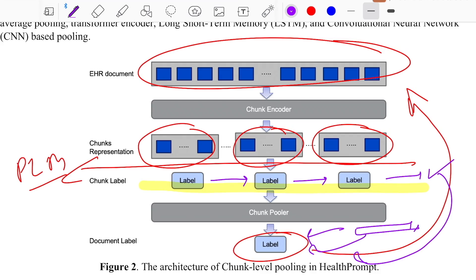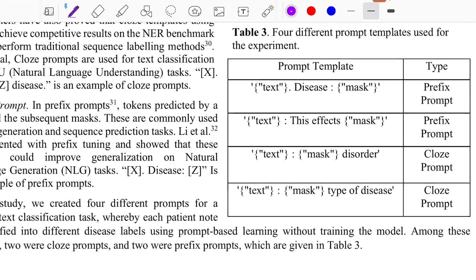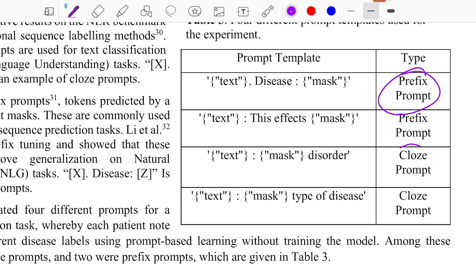For template design, the authors try two versions: prefix prompts and cloze prompts. The cloze prompt idea is predicting a fill-in-the-blank in a given text. For example, you take the original text, apply a colon as part of the template design, insert a mask token for the system to predict, and follow it with a few more words to give more context to the model.